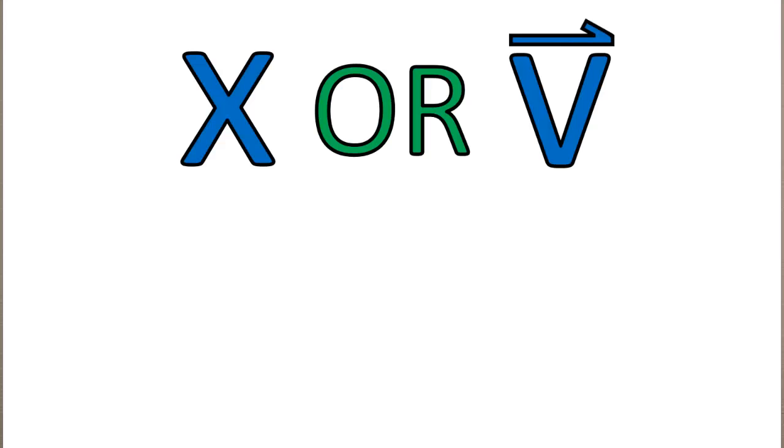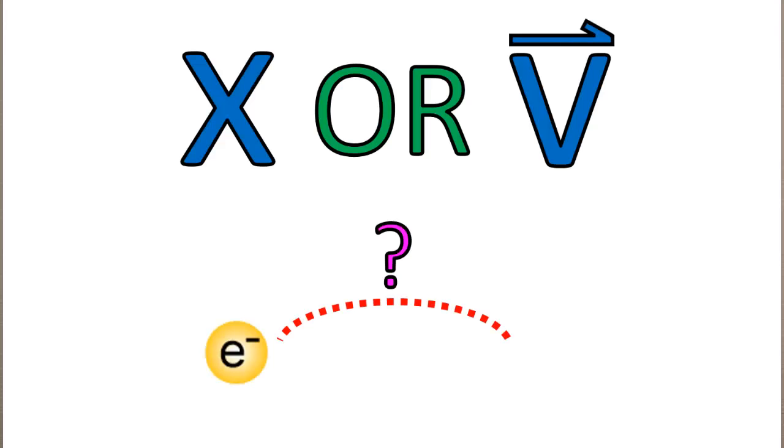Electrons play by a different set of rules. At any given time, we can only know either an electron's position or its velocity, not both. So it's impossible to know an electron's trajectory and therefore impossible to determine where it will end up. This means that two electrons shot from the same position with the same initial velocity will most likely end up in different places. And that's indeterminacy in a nutshell.